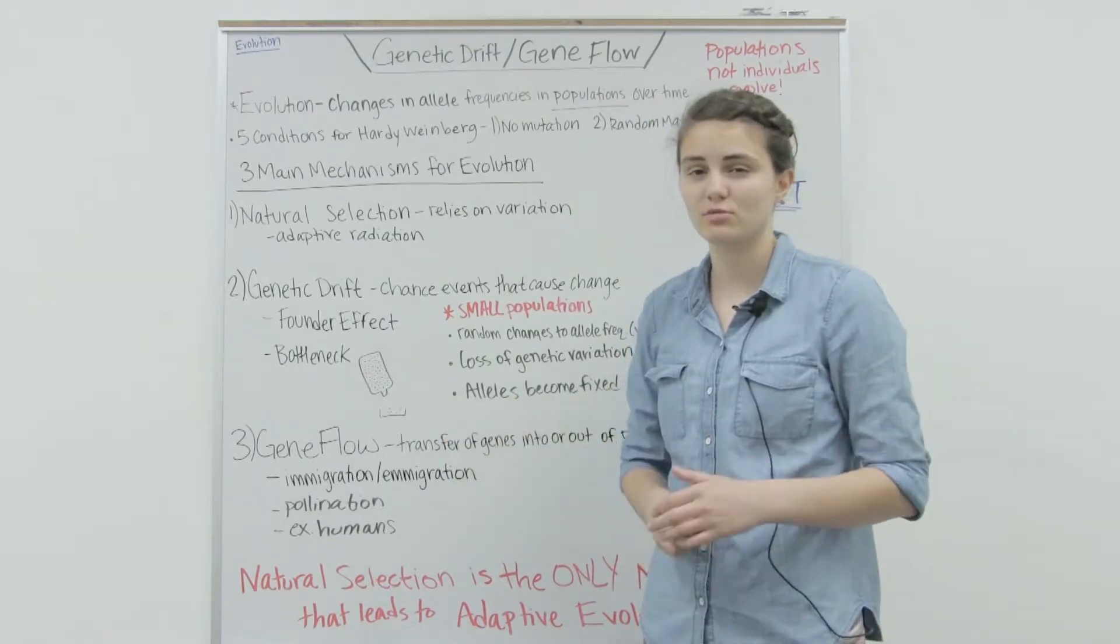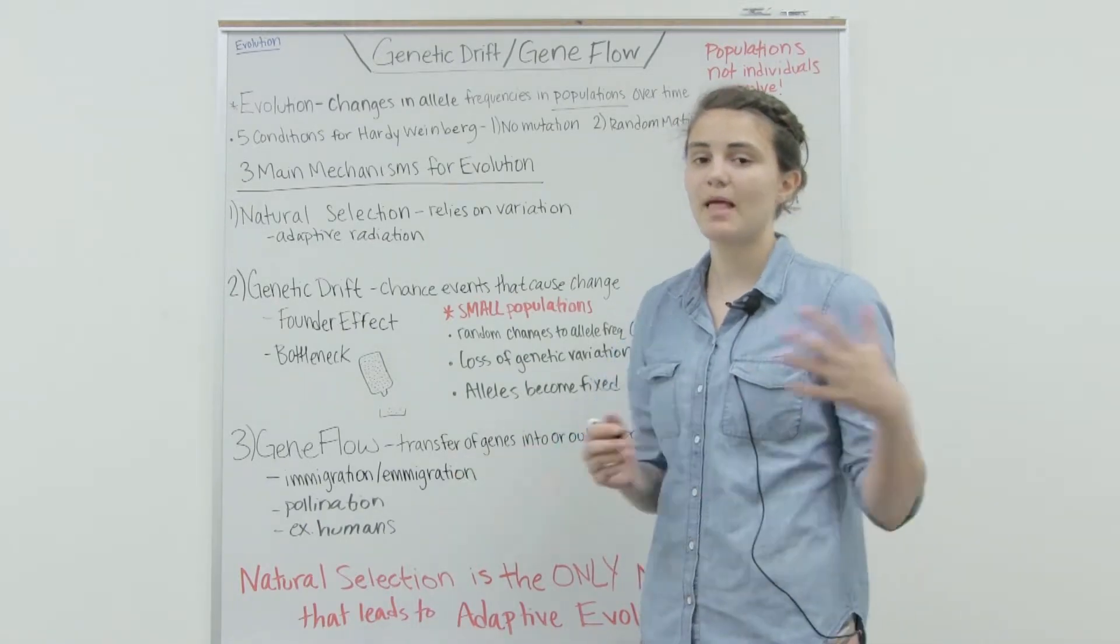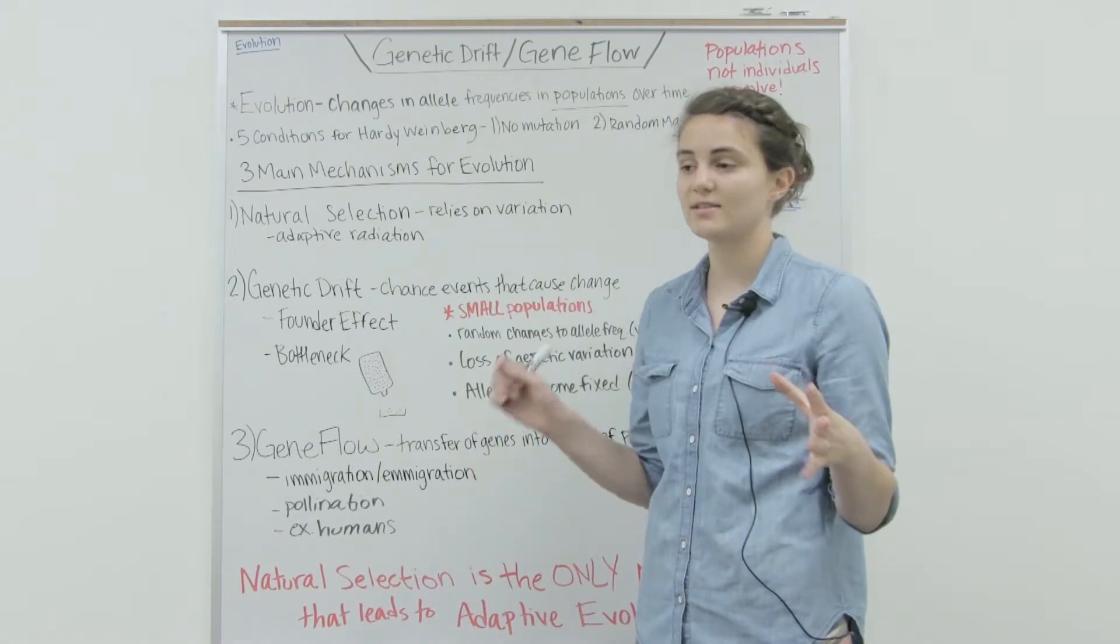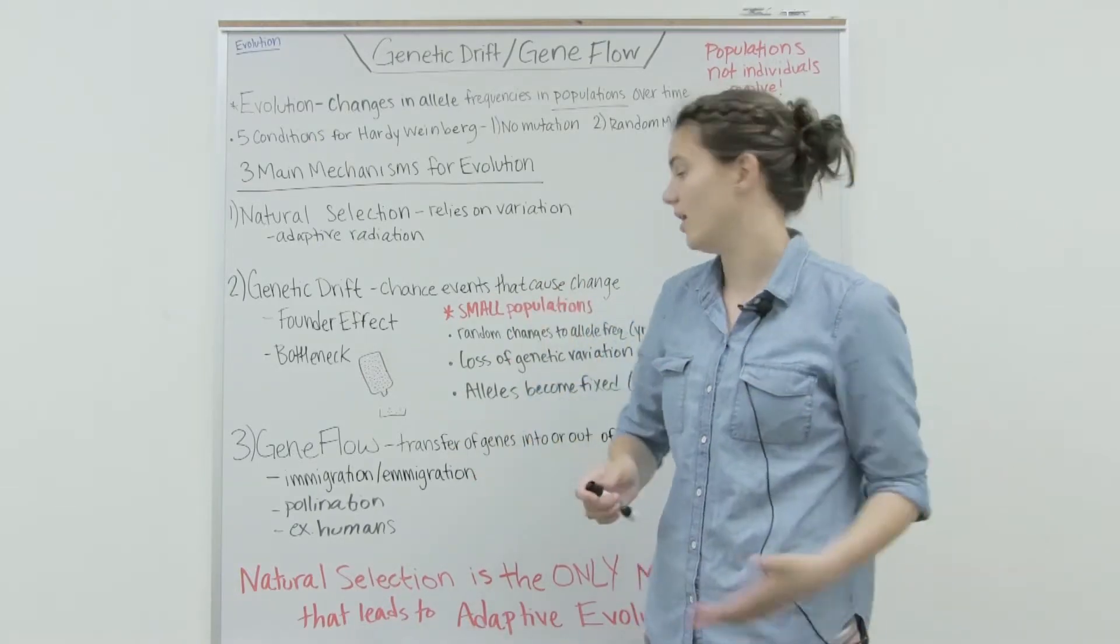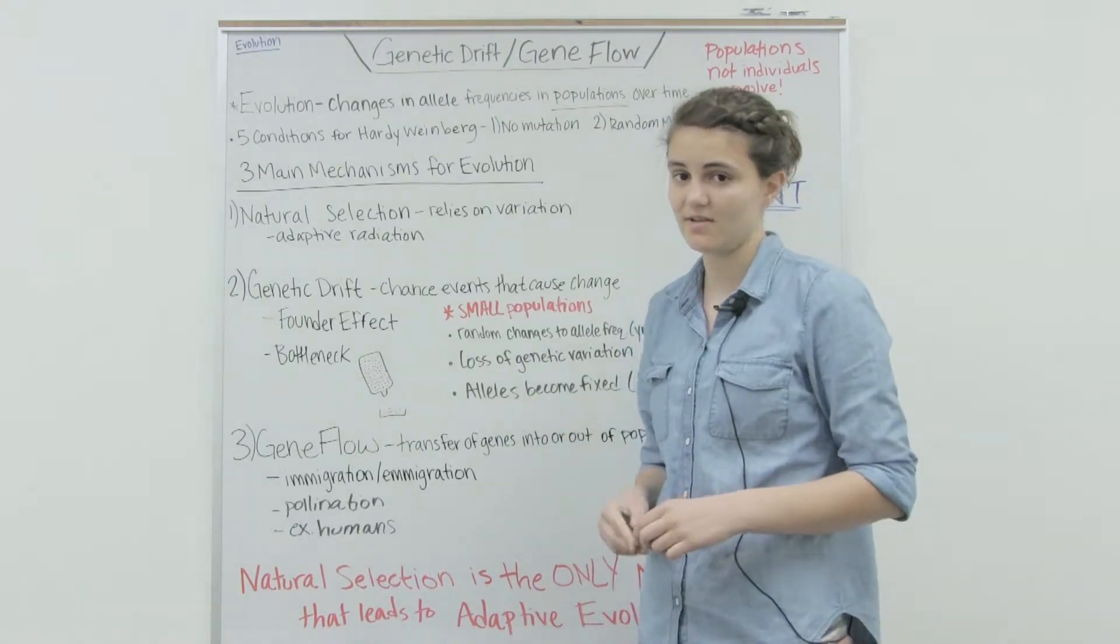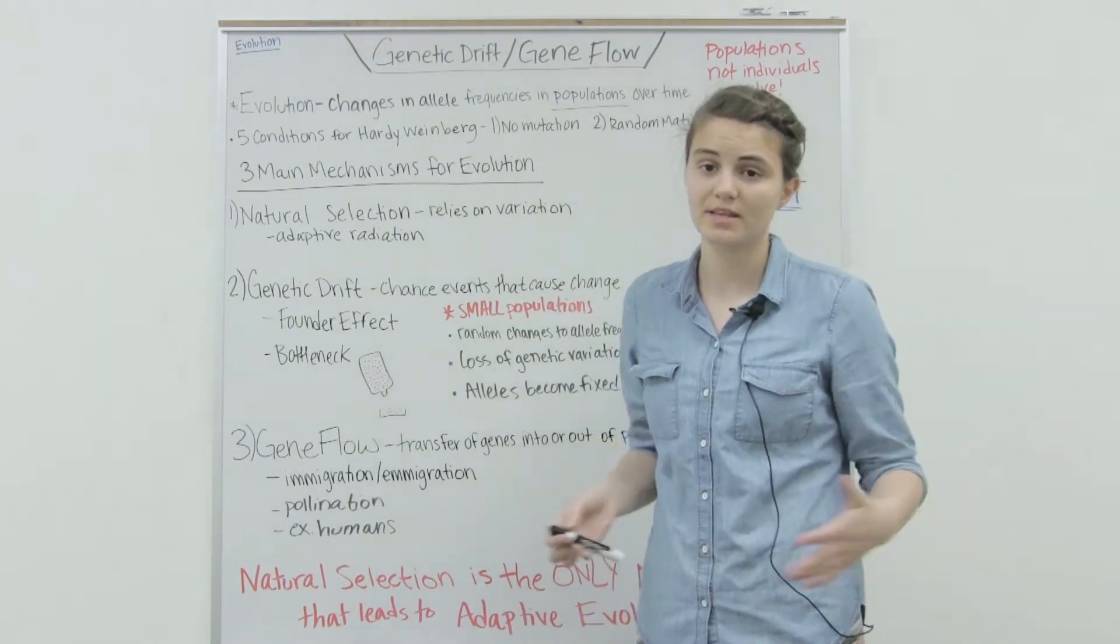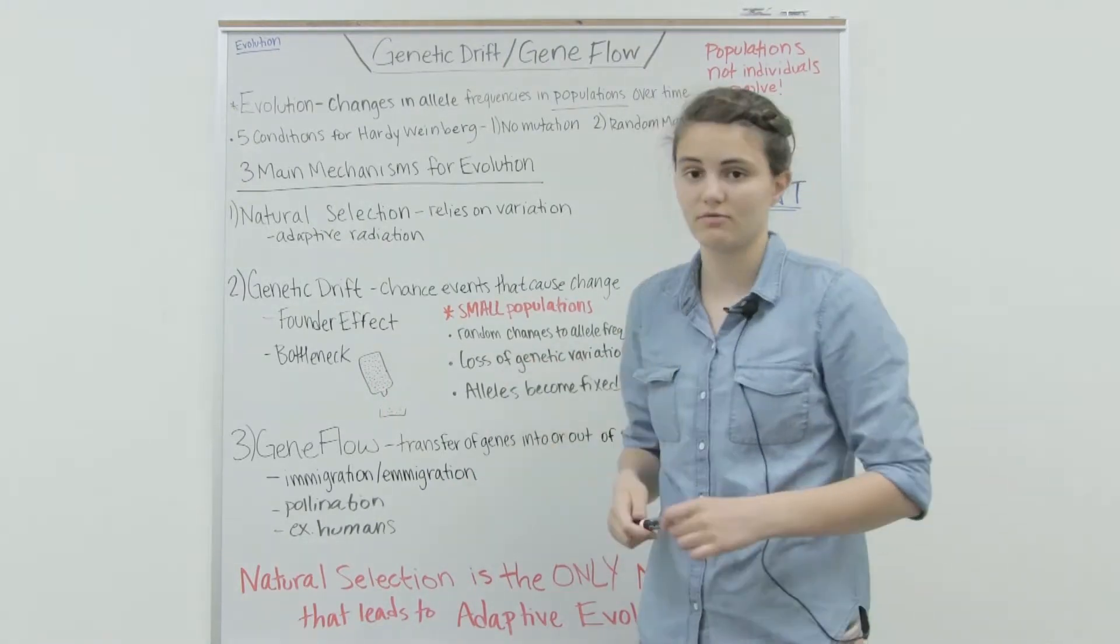Just by random chance, only individuals with red and black made it through. It wasn't anything that they possessed that allowed them to survive, it was just random chance. The flood killed all of these individuals and no blue individuals survived. Now we have a change in our allele frequency because there are no more blue alleles and we have a different proportion of red and black.